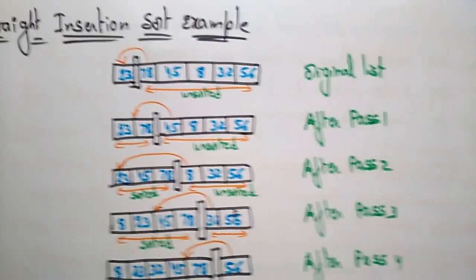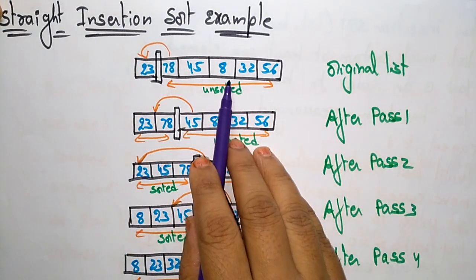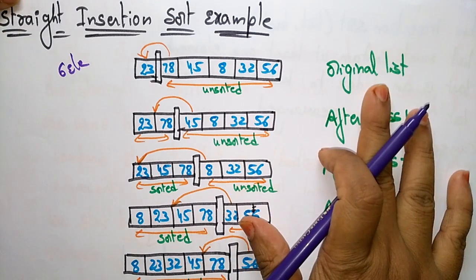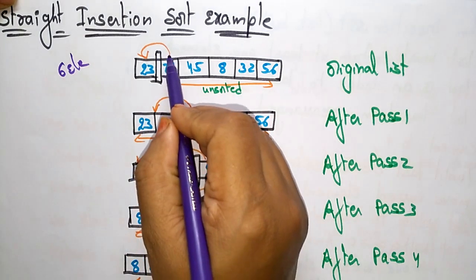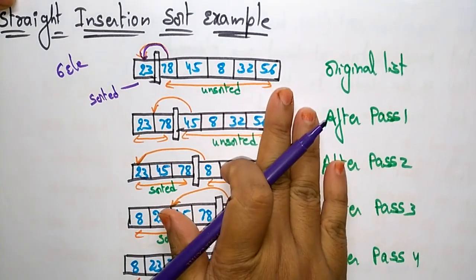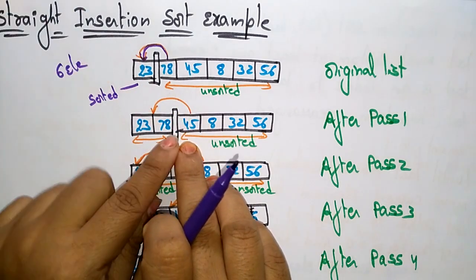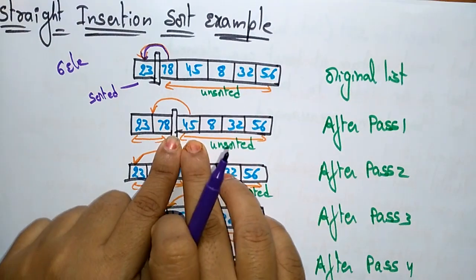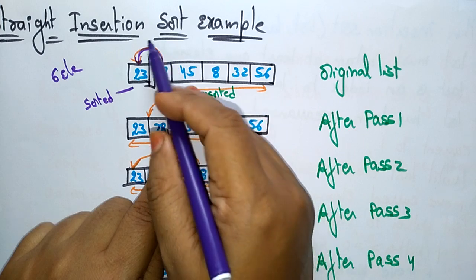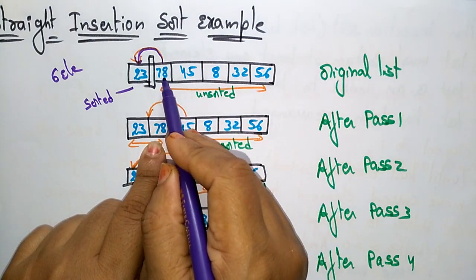Here is an example I already solved. The stride insertion sort example. Here I have taken an unsorted list with six elements. This is the original list. I shift the starting element into the sorted list — this side is sorted and this side is unsorted. After pass one, the first element of the unsorted list, 78, is shifted to the sorted list.